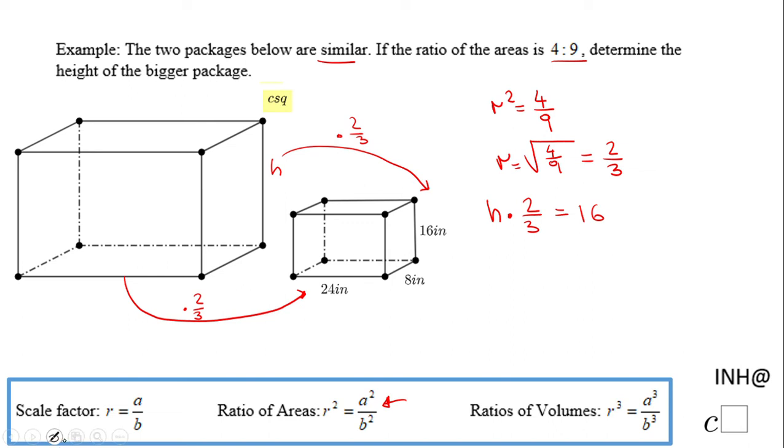The first thing I'll do is multiply by the reciprocal of 2 thirds, which is 3 halves. By multiplying by the reciprocal you cancel out the 2 thirds.